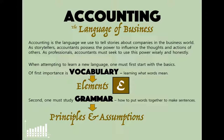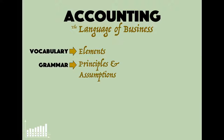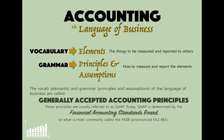We've talked a decent amount about principles — we've learned about revenue recognition and expense recognition — but we haven't really talked much about assumptions. The elements are the things we measure and report; the principles and assumptions tell us how to measure and report them. We call this generally accepted accounting principles, set today by the Financial Accounting Standards Board, the FASB. There is a particular assumption that comes into play here.